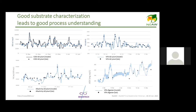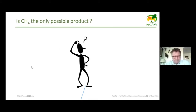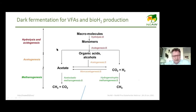Of course, methane is a valuable product, but is it the only one obtainable? Here you have the metabolic network of anaerobic digestion, with hydrolysis as the first step, followed by acidogenesis, acetogenesis, and methanogenesis.